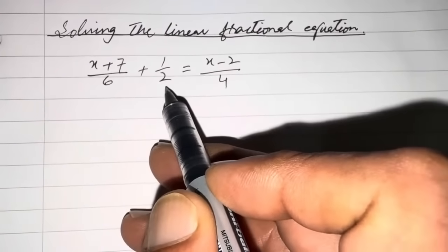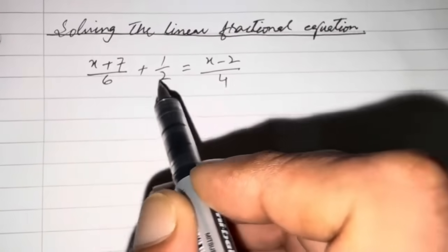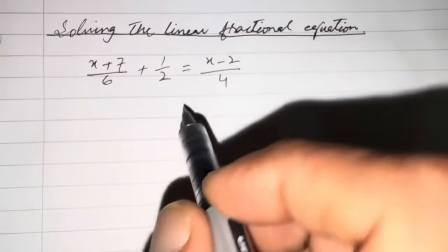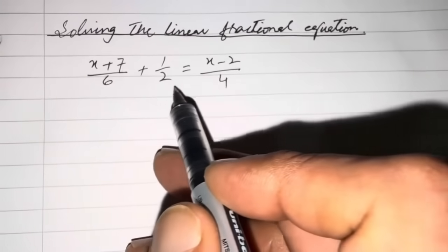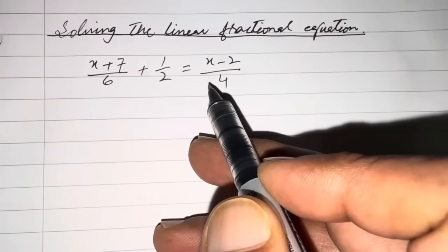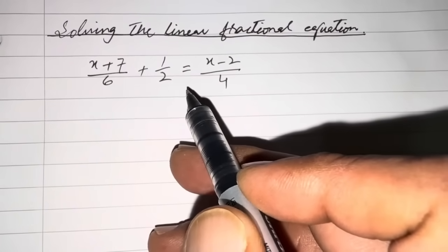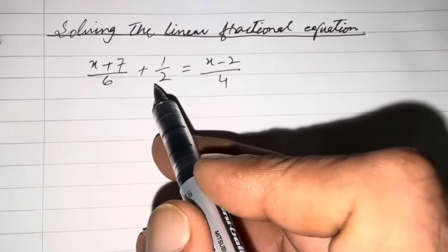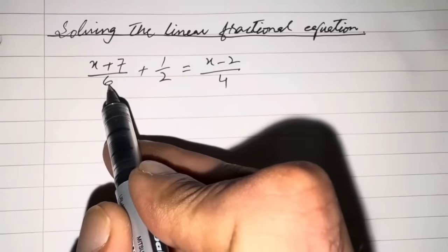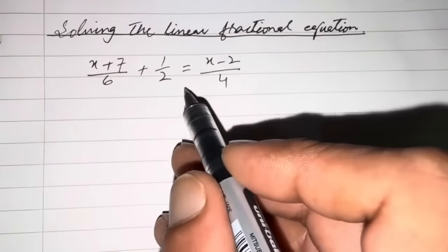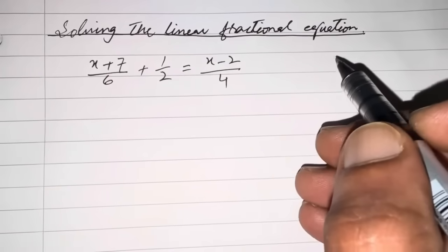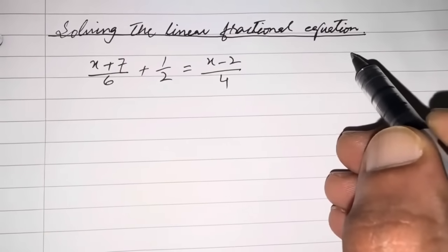The denominators should be removed to make the equation easy to solve. As you know, the method to remove the denominators is to take the LCM and then multiply the whole equation on both sides with the LCM. If you see the denominators, the numbers are 6, 2, and 4. When you take the LCM of 6, 2, and 4, that becomes 12. I can show you how to take the LCM of these numbers.